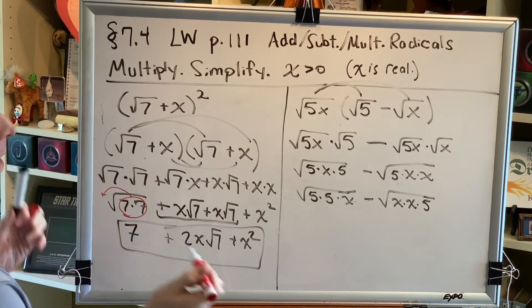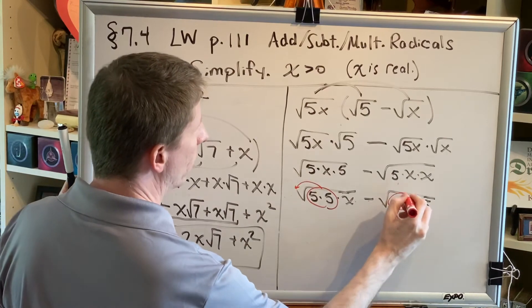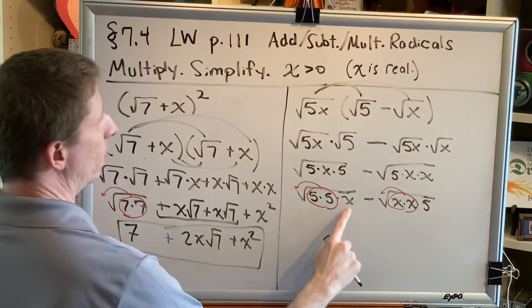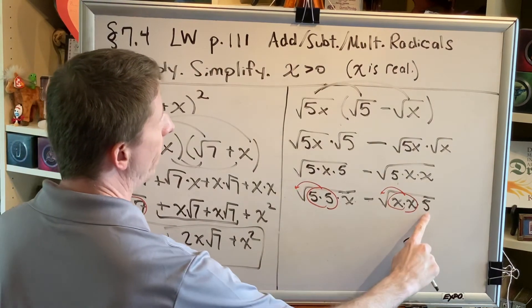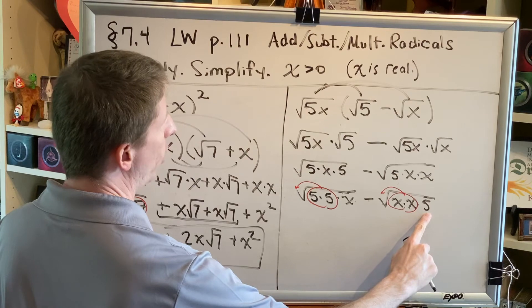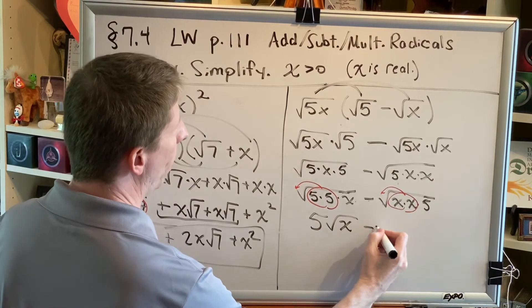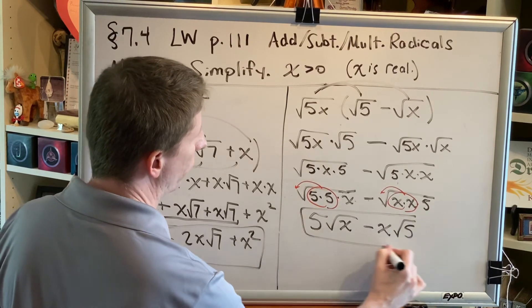Simplifying square roots involves making pairs. Here's a pair which comes out to multiply, here's a pair which comes out to multiply. But this factor does not have a pair, so it stays where it is, and this factor does not create a pair, so it stays where it is. So this gives me 5 square root of x minus x square root of 5, and that's the final answer for this problem.